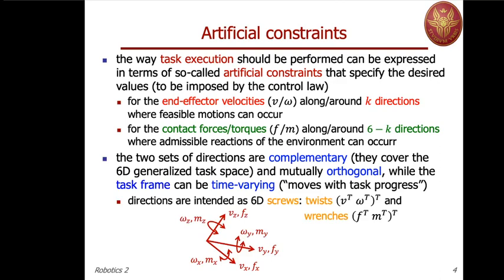Why 6-dimensional? Because we are using the mechanical concept of screws. Screws are 6-dimensional vectors, which are the stacking of either linear and angular velocity — called twists — or forces and torque stacked together — called wrenches. Twists and wrenches are particular screws, and there is a mathematical theory of screws connected to that. We will not get into the detail of this formalism, but we will see that we are using twists and wrenches in a proper way.